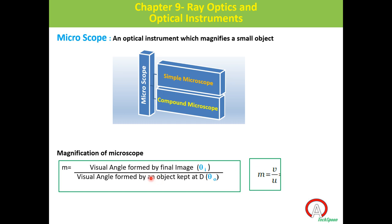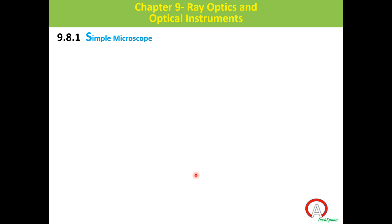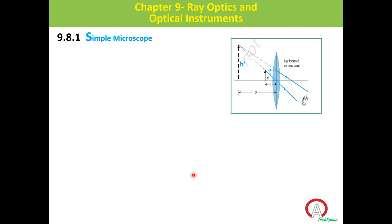A simple microscope is nothing but a single convex lens. For a convex lens, we recall image formation from class ten. If we bring an object from infinity toward the focus or lens, a real image forms on the right side of the lens. If an object is at infinity, the image forms at the second focal point. If the object is at focus, the image forms at infinity.